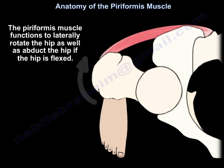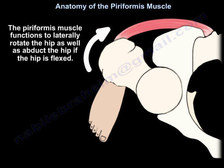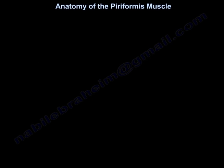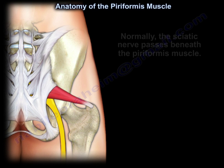The Piriformis Muscle functions to laterally rotate the hip, as well as abduct the hip if the hip is flexed. The nerve to the Piriformis, which innervates the Piriformis Muscle, is L5, S1, and S2.